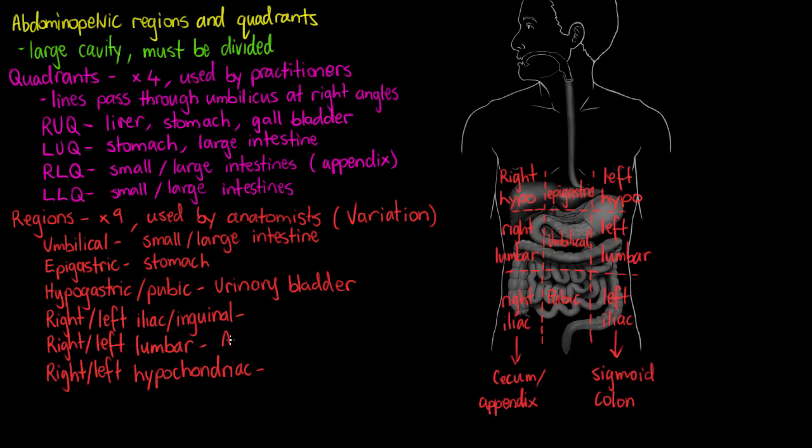Within our right and left lumbar we're usually just going to see the ascending and descending portions of our large intestine or colon. So on the right lumbar here we have our ascending colon. And left lumbar we have our descending colon.